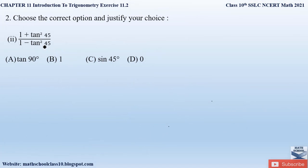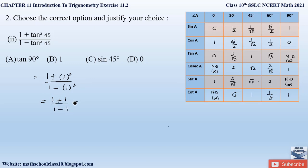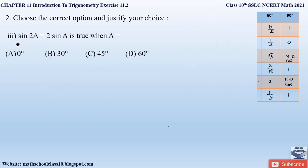The second part of the question is: (1 + tan square 45) divided by (1 minus tan square 45). Referring to the table, tan 45 equals 1. Substituting: numerator is 1 plus 1 squared which is 1 plus 1 equals 2; denominator is 1 minus 1 squared which is 1 minus 1 equals 0. Anything divided by 0 is undefined, so our correct answer is option D.